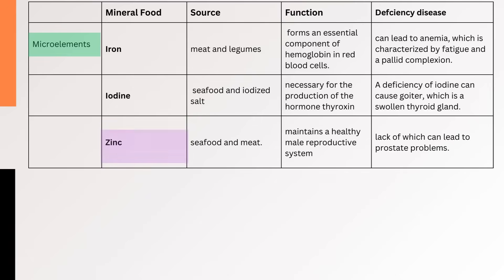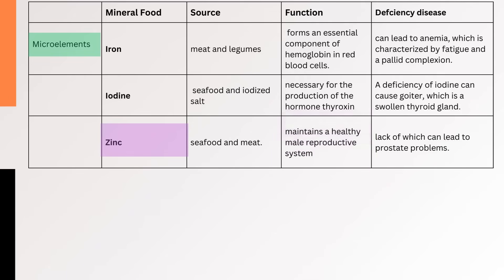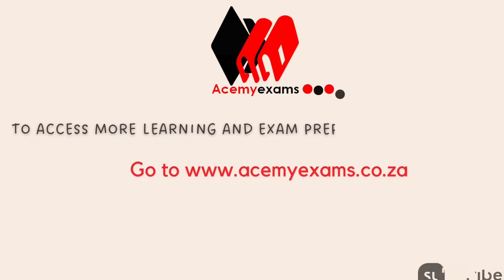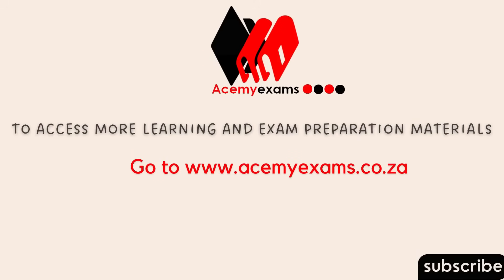3. Zinc — Zinc is found in seafood and meat. Consuming foods rich in zinc is crucial for maintaining a healthy male reproductive system, and a lack of zinc can lead to prostate problems. To access more learning and exam preparation materials, go to www.acemyexams.co.za, which is also linked in the video description below.